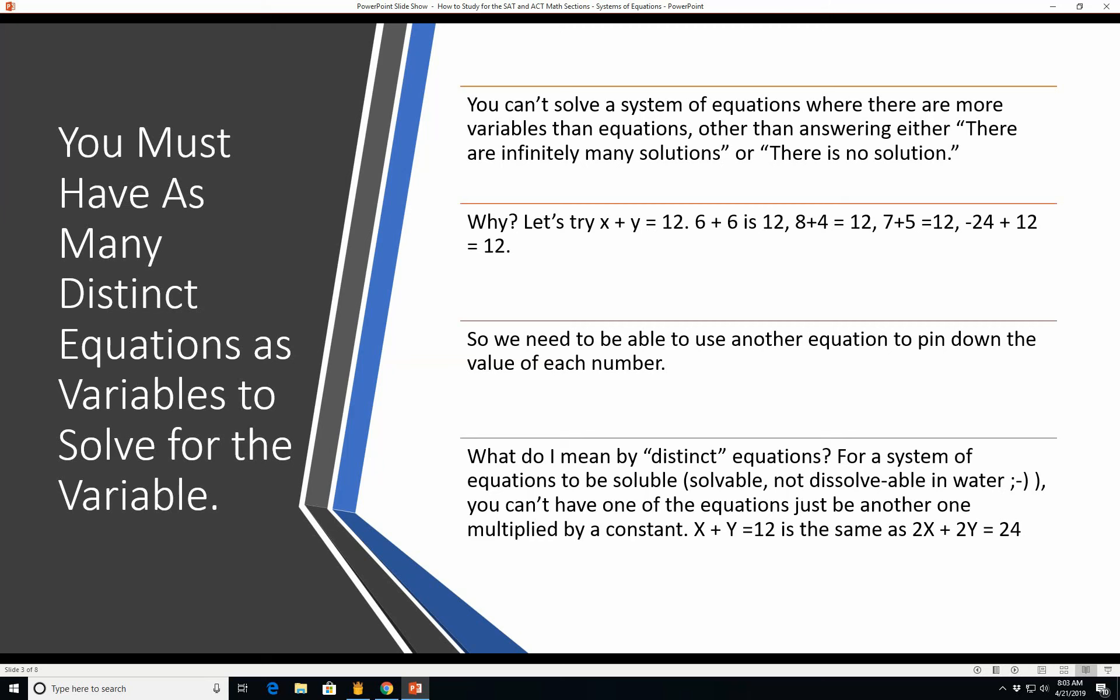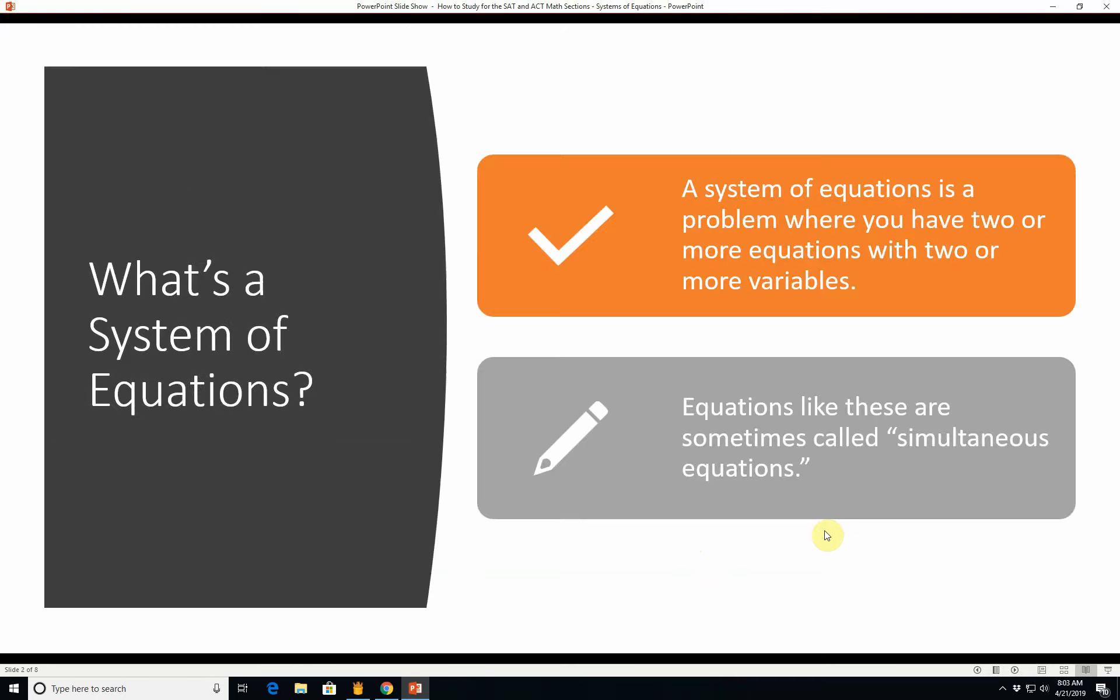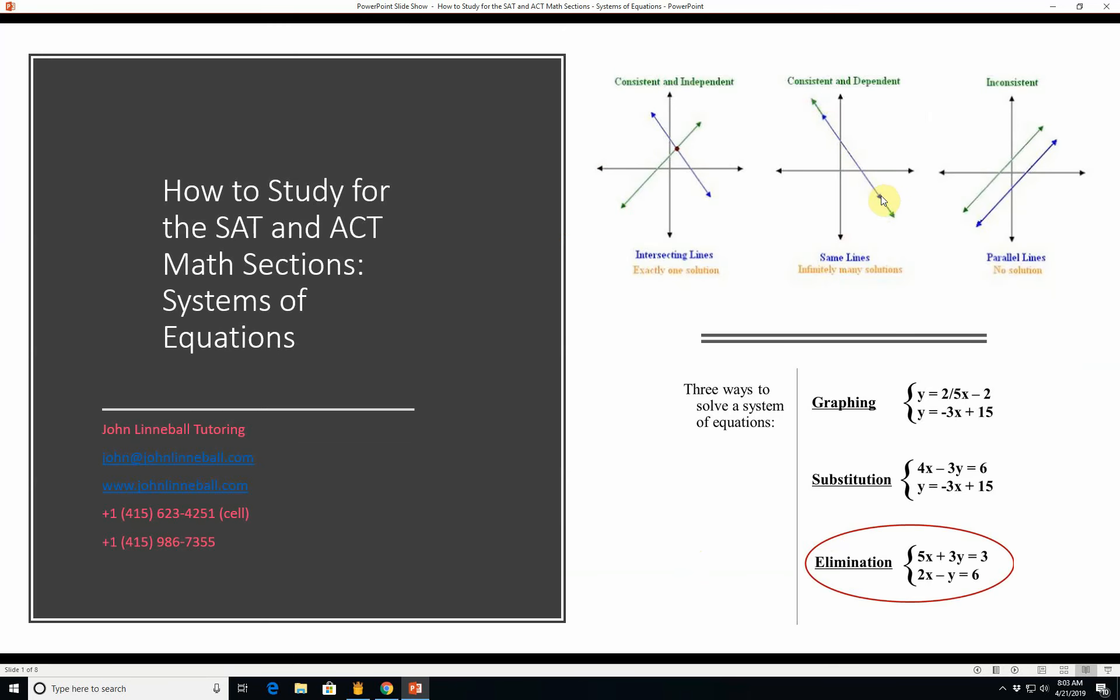So if you have three variables you need three different equations. That's what I mean by distinct. What do I mean by distinct equations? For a system of equations to be solvable you can't have one of the equations just be another one multiplied by a constant. x plus y equals 12 is the same as 2x plus 2y equals 24 because you just multiplied everything by two. I have seen in the Barron's SAT book they talk about two distinct parallel lines driving it home that they are two distinct lines that are parallel in that particular problem.